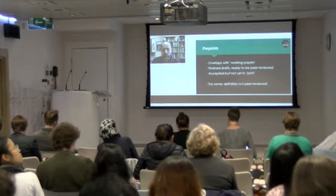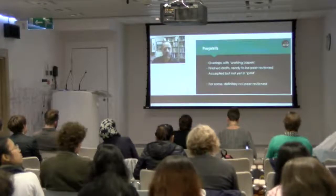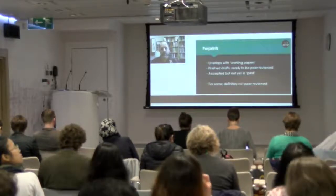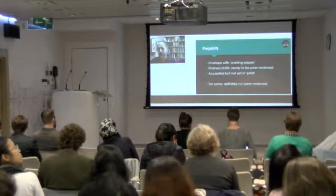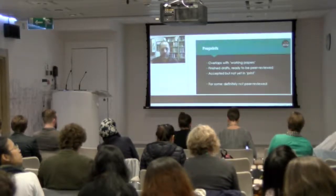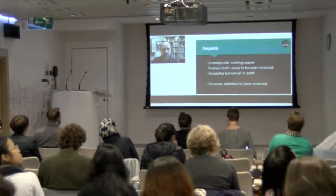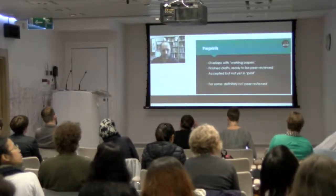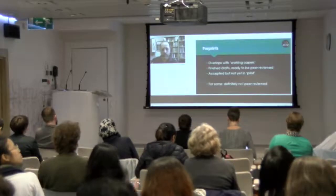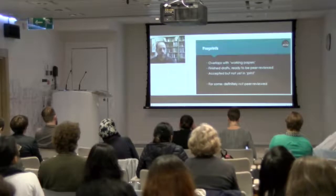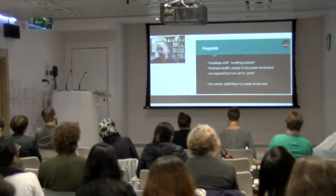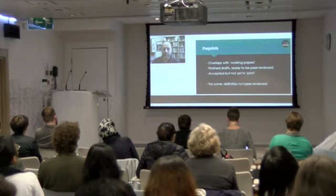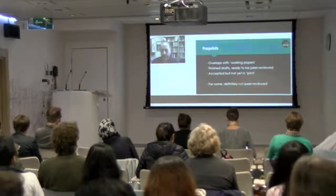Preprints have some overlap with working papers, but they imply something more like a finished draft — something that may be ready to be peer-reviewed, or even something that has been accepted and gone through the peer-review process but is not yet in print. For some people, this is an important distinction because preprints are definitely not peer-reviewed. Some journals in sociology will not consider your work if it has already been peer-reviewed, so if you're considering it as a preprint, that means you've distributed the work but it has not been subject to peer-review, and you can submit it to a journal as an original submission.